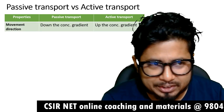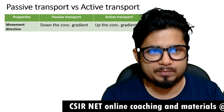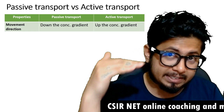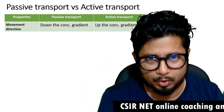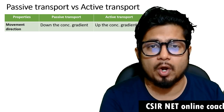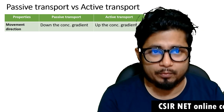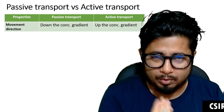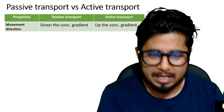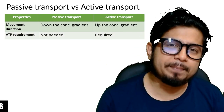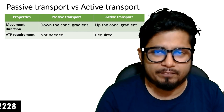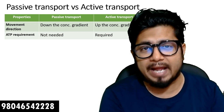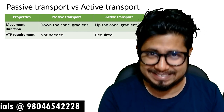The first thing is the movement direction. The direction of movement for passive transport is down the concentration gradient, from high concentration to low. While active transport always occurs against the concentration gradient, that is from low concentration to high concentration. The ATP requirement for passive transport is none, but for active transport ATP is needed — that's why it's called active transport.